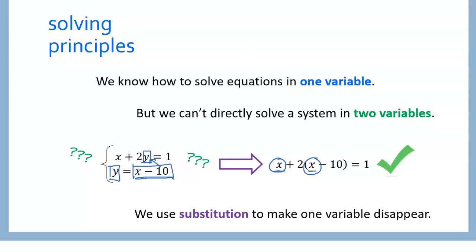We can solve this using our normal solving methods — we can distribute and then combine like terms, and get it down to x on one side and a number on the other side. So the whole point of substitution is to make one of the variables disappear so we can use those same methods that we've used before.